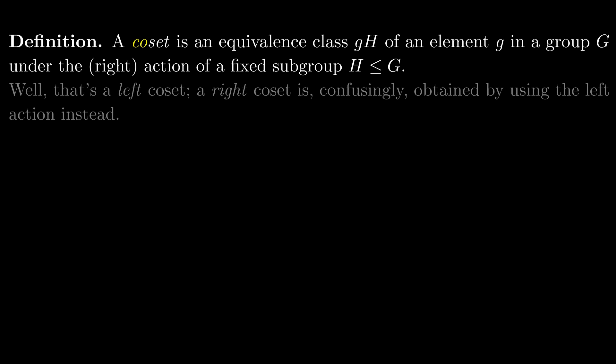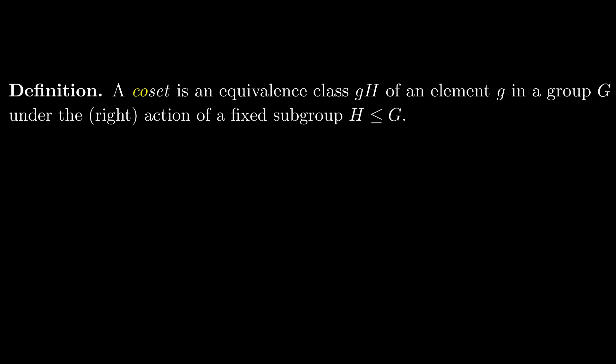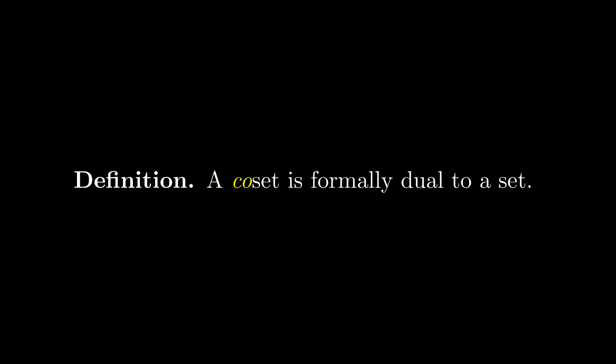I'm sure you're disappointed. A co-set doesn't really seem like the opposite of a set. If you're disappointed that the infallible field of mathematics has such annoying inconsistencies in terminology, I've got some bad news for you. As an act of defiance, and since I won't be talking about quotients of groups by subgroups anymore, let's redefine co-sets to be actual opposites to sets.